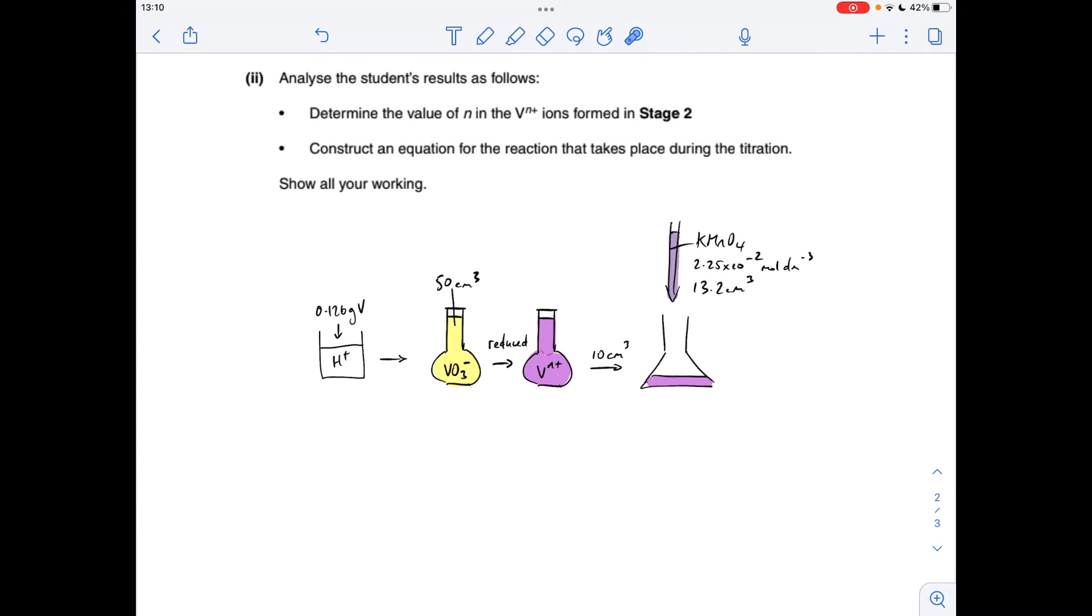So moving on to the calculation, I've got one of my typical diagrams here to visualize what's going on. They've taken this known mass of vanadium, put it in acid, and it's generated this yellow VO3 minus ion which they've put into a 50 cm cubed volumetric flask. They've then reduced that to the violet V2+ solution, taken 10 centimeters cubed out, and carried out a titration using KMnO4 at that concentration and volume.